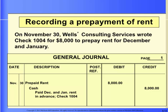On November 30, Wells Consulting Services wrote check 1004 for $8,000 to prepay rent for December and January. When the business pays for two months' rent in advance, it debits prepaid rent for $8,000 and credits cash for $8,000. Note that both accounts affected are assets. Here is the general journal entry.